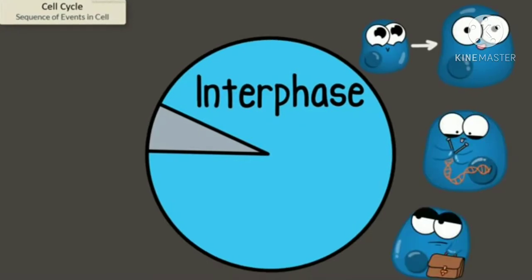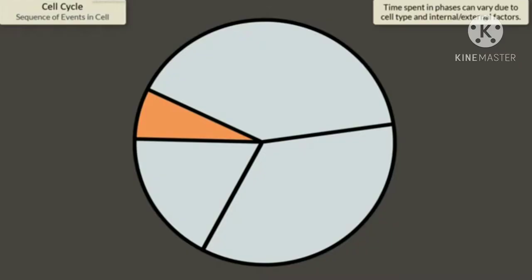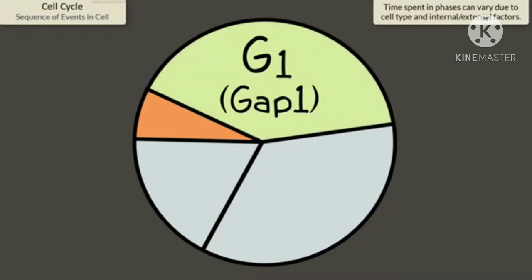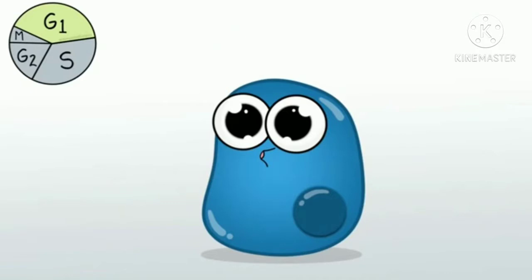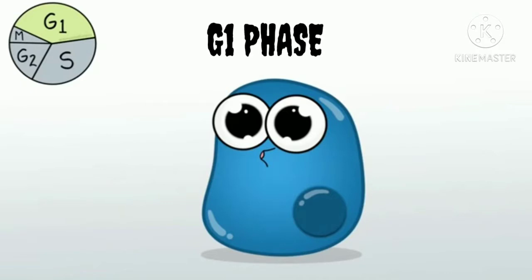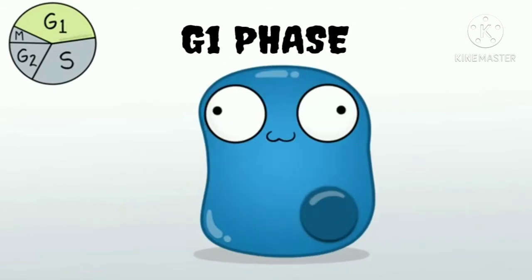The first phase is interphase. During interphase, the cell undergoes normal growth processes while also preparing for cell division. In order for a cell to move from interphase into the mitotic phase, many internal and external conditions must be met. The three stages of interphase are called G1, S, and G2.